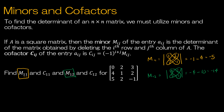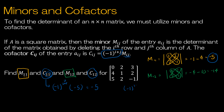The cofactor is simply the minor times negative 1 to the i plus j. For cofactor C(1,1): negative 1 to the 1+1 times negative 5. Negative 1 to the second is positive 1, so the result is negative 5 — it didn't change. For C(1,2): negative 1 to the 1+2 times negative 14. Negative 1 to the third is negative 1, so the cofactor just possibly changes the sign. For this value it becomes positive 14, since i+j is odd.